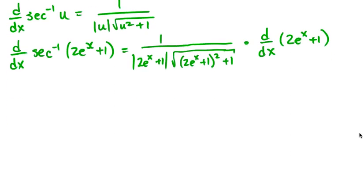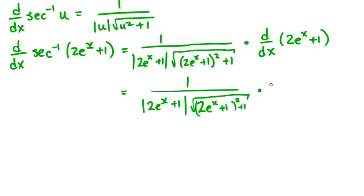And we have to multiply that by the derivative of 2e to the x plus 1. That gives us, this stays the same, absolute 2e to the x plus 1. And the square times the derivative of 2e to the x, which is 2e to the x.